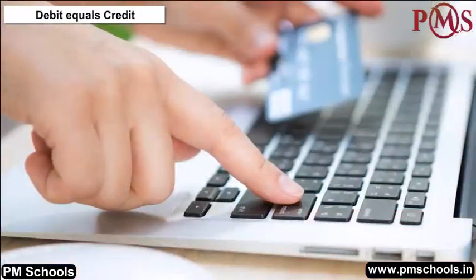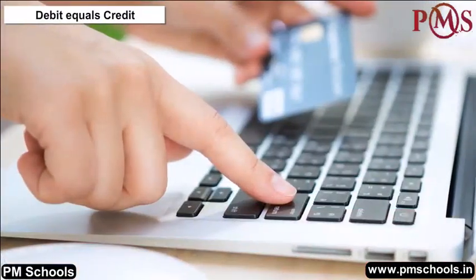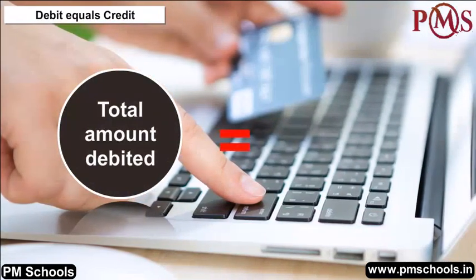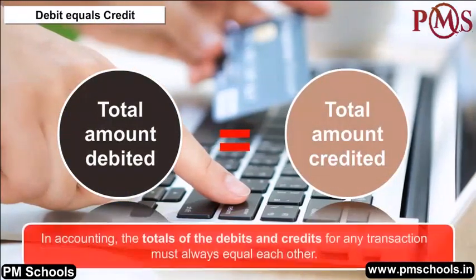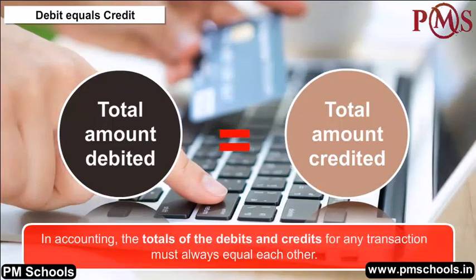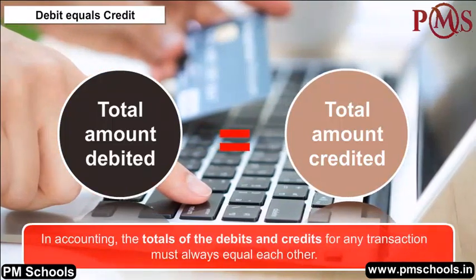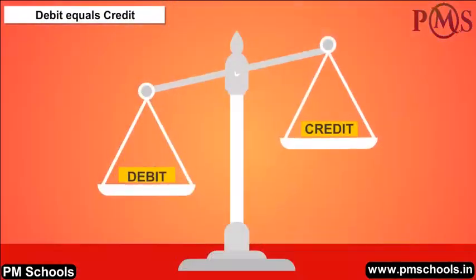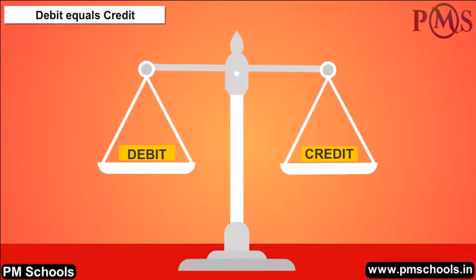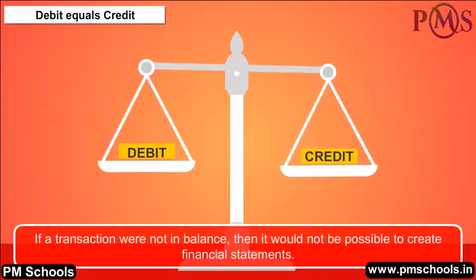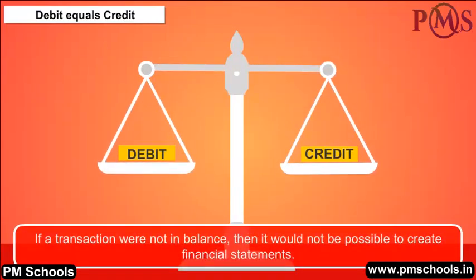Debit Equals Credit: When recording each transaction, the total amount debited must equal the total amount credited. In accounting, the totals of debits and credits for any transaction must always equal each other. If a transaction were not in balance, it would not be possible to create financial statements.